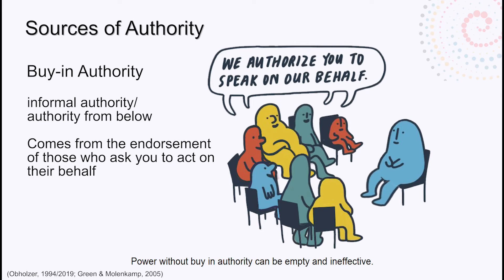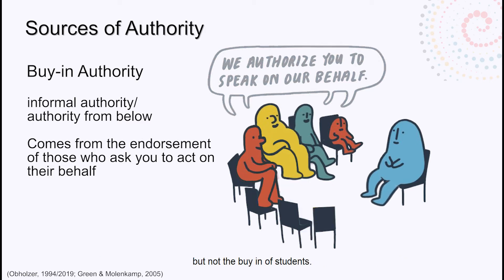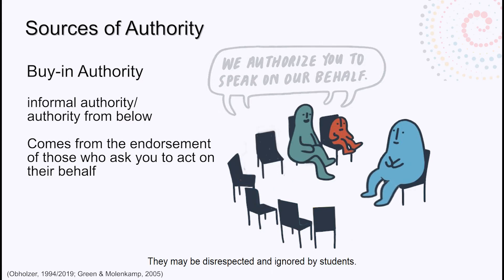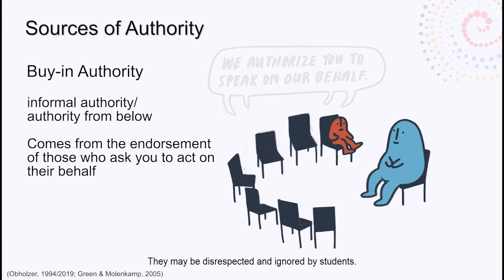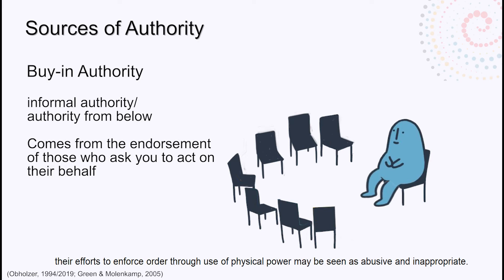Power without buy-in authority can be empty and ineffective. For example, a teacher who has formal authority that comes with a role but not the buy-in of the students may be disrespected and ignored. Similarly, when police forces in the U.S. or other countries lose the trust and buy-in authority of a large percentage of the population they are authorized to serve, their efforts to enforce order through use of physical power may be seen as abusive and inappropriate.